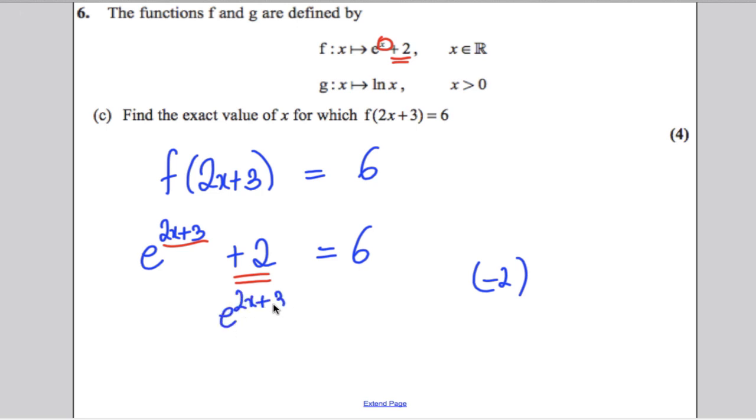What is more sensible here, before you take natural logarithms of both sides, why wouldn't you subtract 2 of both sides? So, you would get e to the 2x plus 3 is equal to 4. Now, you can take natural logarithms of both sides and get 2x plus 3 is ln 4. And then making x a subject of the formula, x is therefore ln 4, subtract 3, all divided by 2.